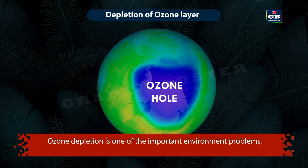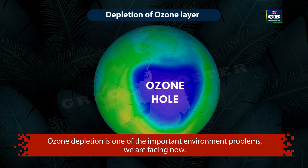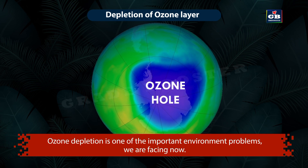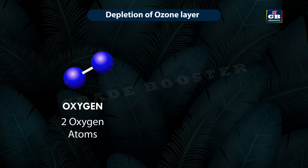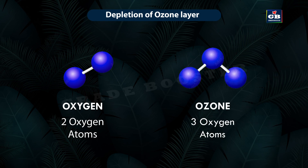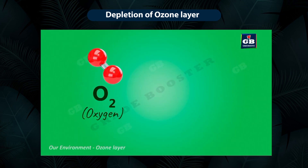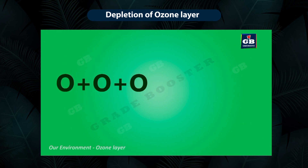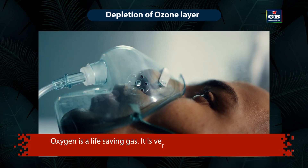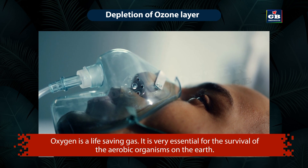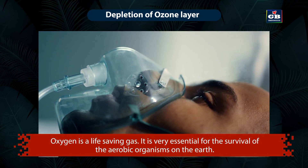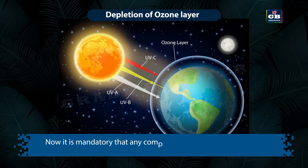Ozone depletion is one of the important environmental problems we are facing now. Let us know about the formation and depletion of the ozone layer. Oxygen and ozone are both made up of oxygen atoms, but they differ a lot in their properties. Oxygen is made up of two oxygen atoms and its chemical formula is O2. Ozone is made up of three oxygen atoms and its chemical formula is O3. Oxygen is a life-saving gas, very essential for the survival of aerobic organisms on Earth.